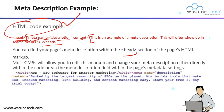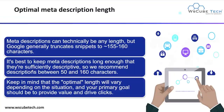Here you can see we have a title and a meta description for this particular website. This is the example of meta description.